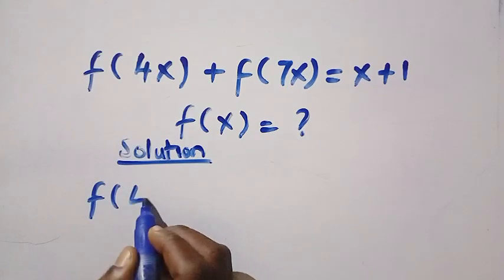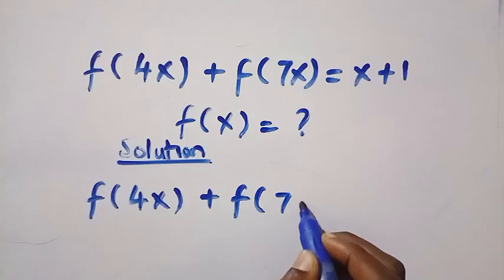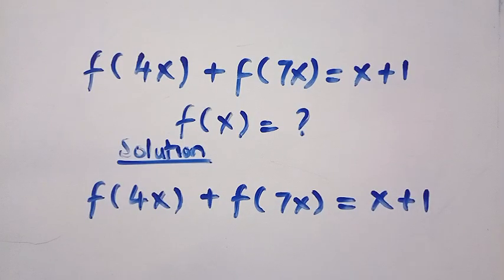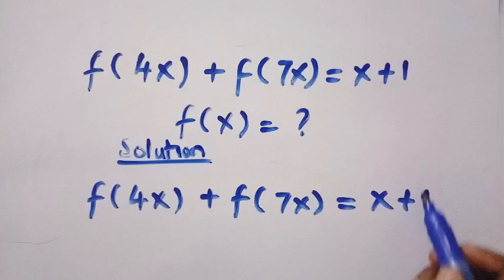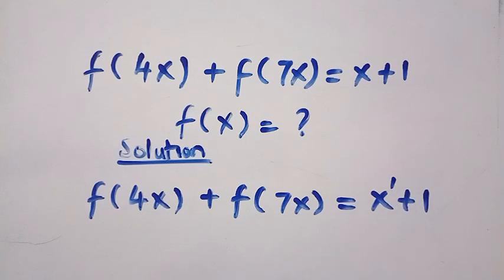We are given f of 4x plus f of 7x equals x plus 1. Here is the given question. Looking at this right hand side, we have the degree of 1, which is the linear equation.